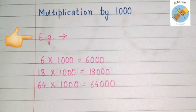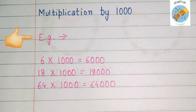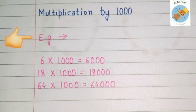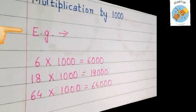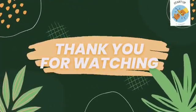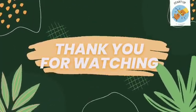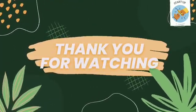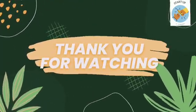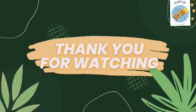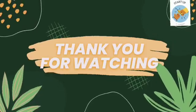Eighteen multiplied by one thousand is equal to eighteen thousand. Sixty-four multiplied by one thousand is equal to sixty-four thousand. I hope this video will be beneficial for you. Stay tuned for more such videos. Thank you, have a great day.